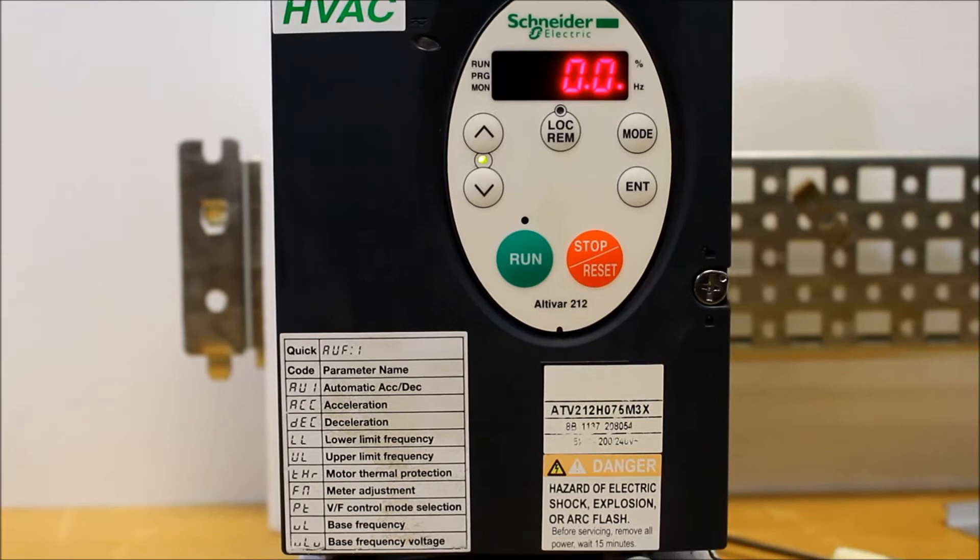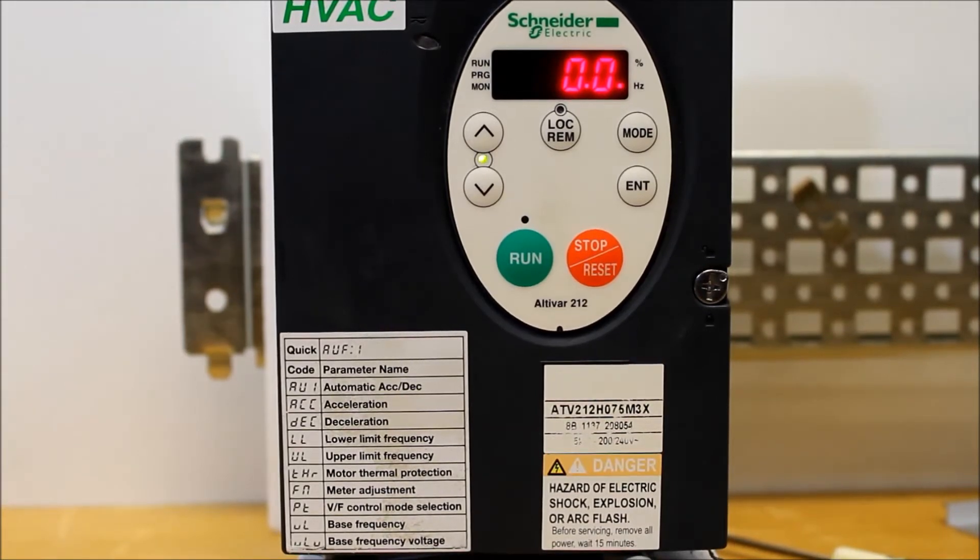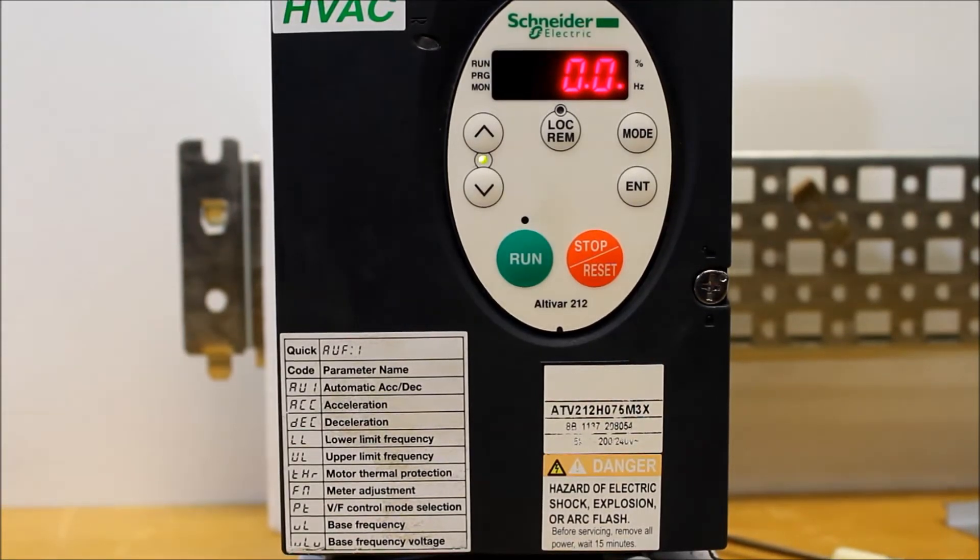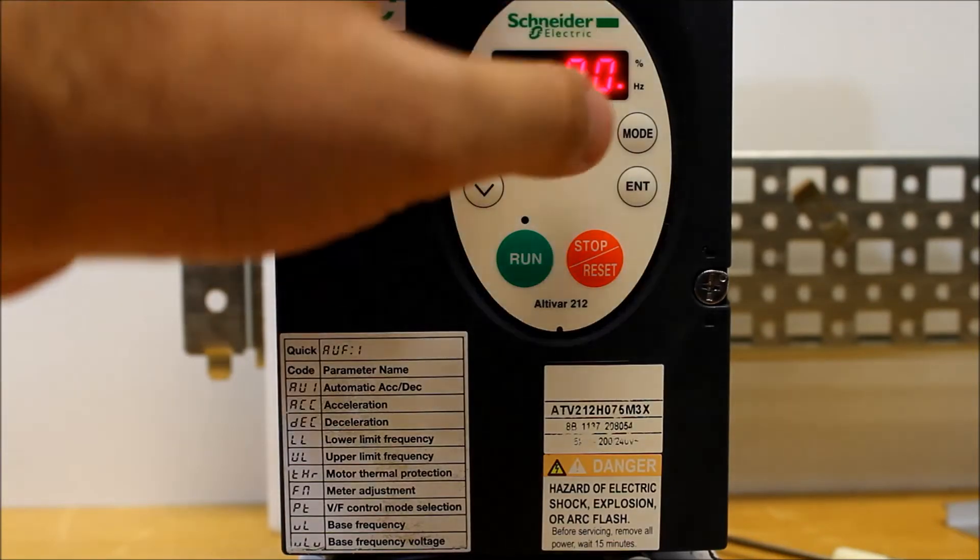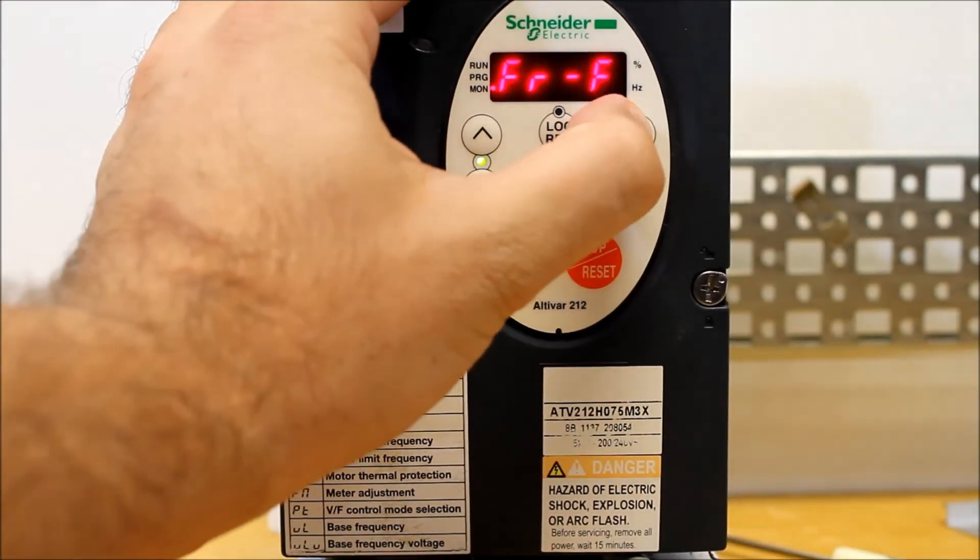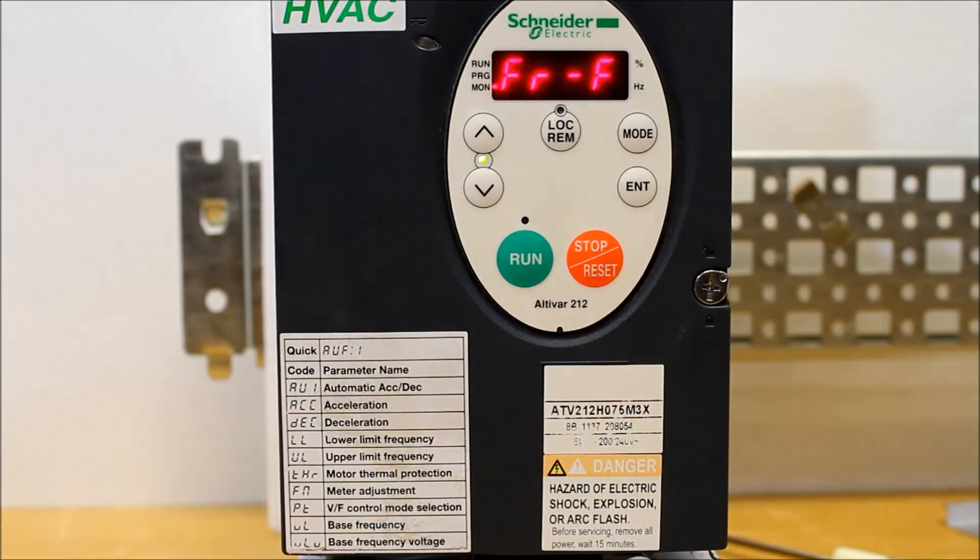So in this drive, you can see about four faults that have occurred in succession on this 212 drive. To see that, from the main menu, you have to press the mode button until you find FR-F.